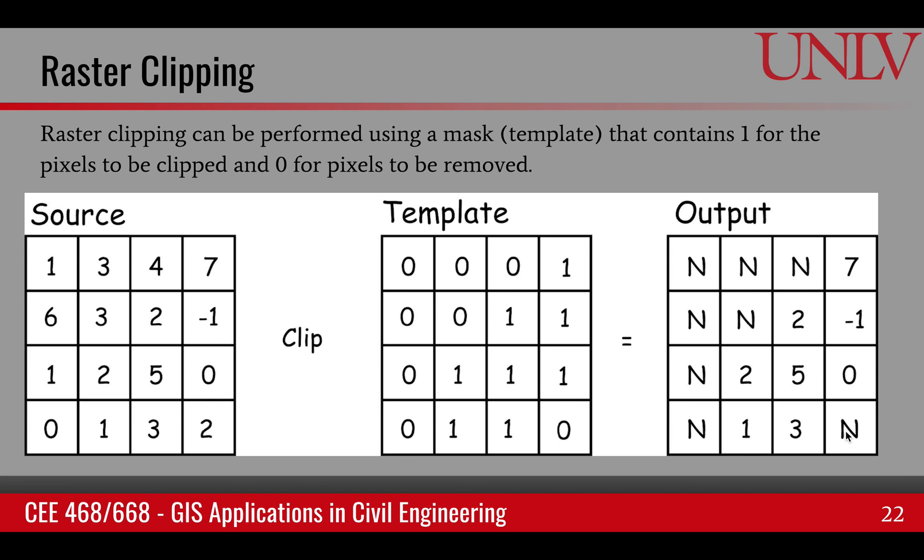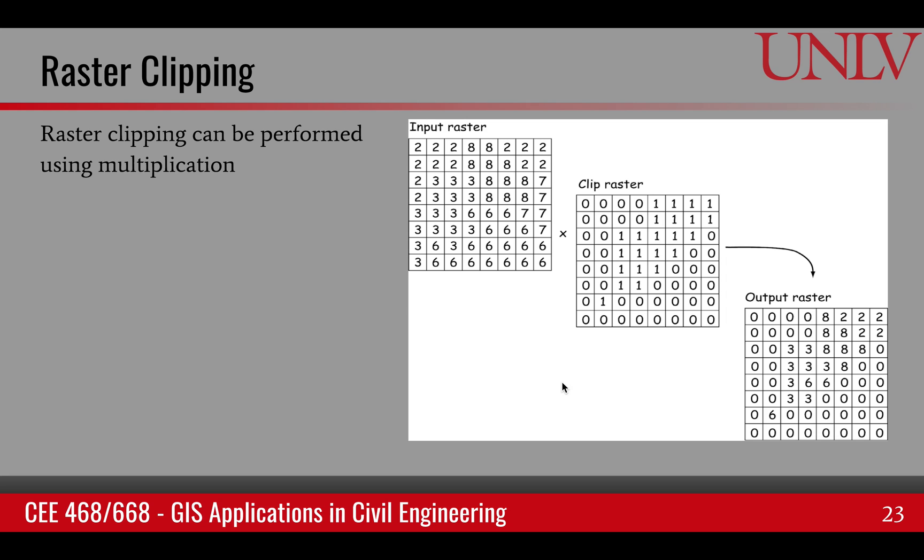Now it is quite common practice to use multiplication in this process as well. The only key that you have to remember is that in case of multiplication, your input data shouldn't have any zeros because multiplication of 0 and 1 will result in 0, which means that part is removed. But if you already have a 0 in your input data, that will also result in 0. So it will be unintentionally removed even though the mask contained a value 1. Here's an example of removing or clipping a raster image using a multiplication with a raster mask.